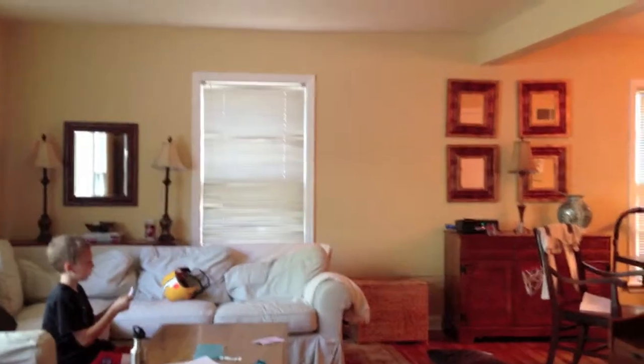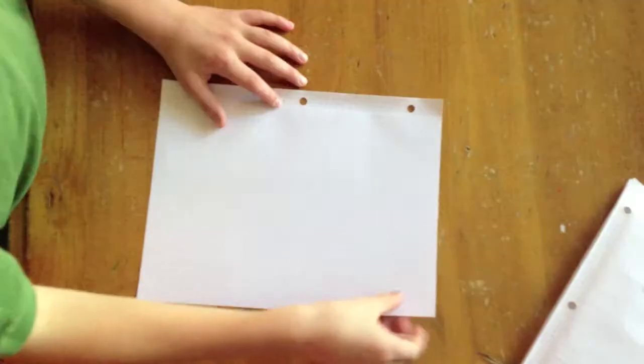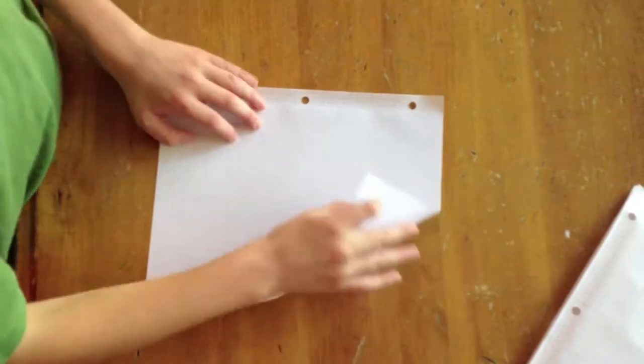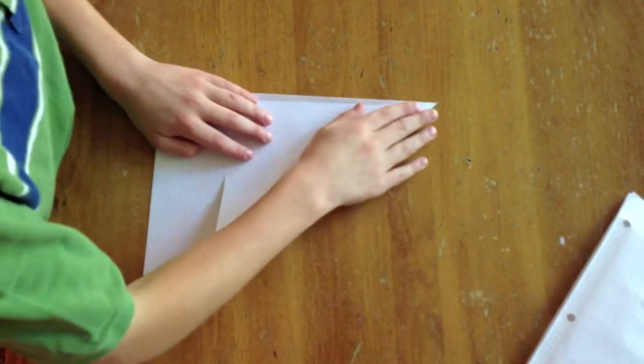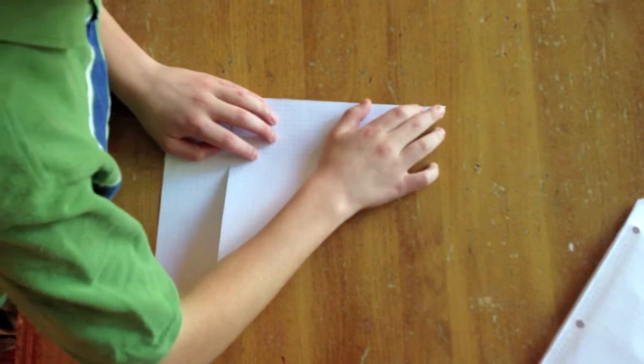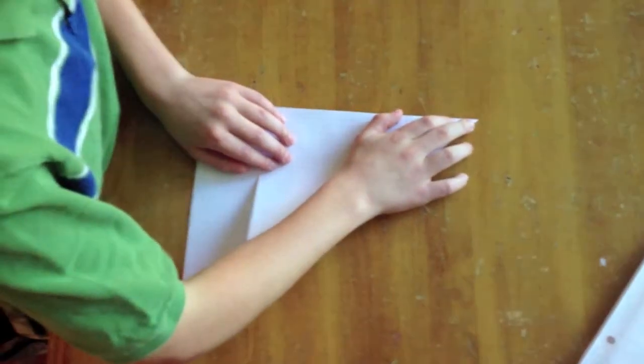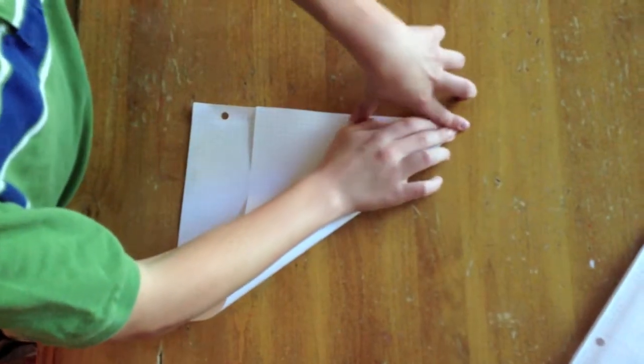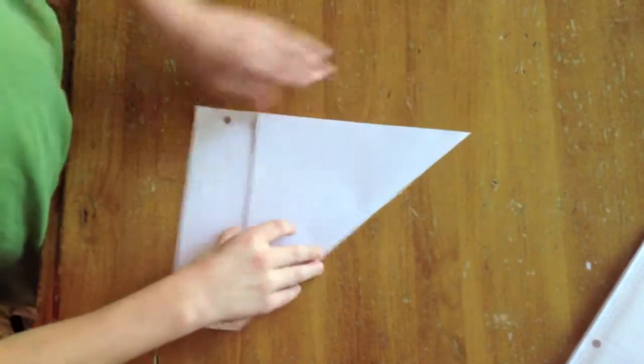Today I'm going to teach you how to make a paper airplane that I invented. First you take one of the corners and fold it as I am doing and it does not matter what kind of paper you use, whether it's three-hole paper or normal sized 8x11 paper.